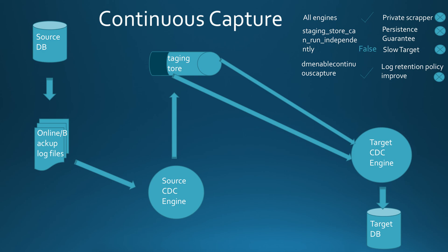These trade-offs should be evaluated and understood before deciding to use this feature in your replication environment. For performance reasons, if you choose to use continuous capture, you need to ensure that your disk subsystem where the CDC replication staging store is located consists of very high speed storage.